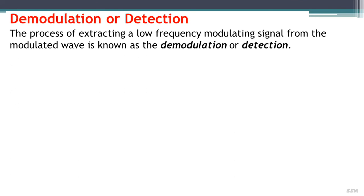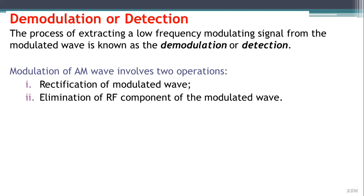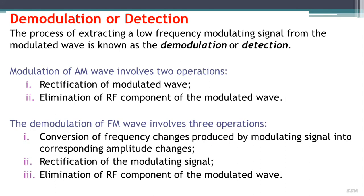Demodulation or detection is the process of extracting a low frequency modulated signal from the modulated wave. The demodulation of an AM wave involves two operations: rectification of the modulated wave and elimination of the RF component. The demodulation of an FM wave involves three operations: conversion of frequency changes into corresponding amplitude changes, rectification of the modulating signal, and elimination of the RF component.